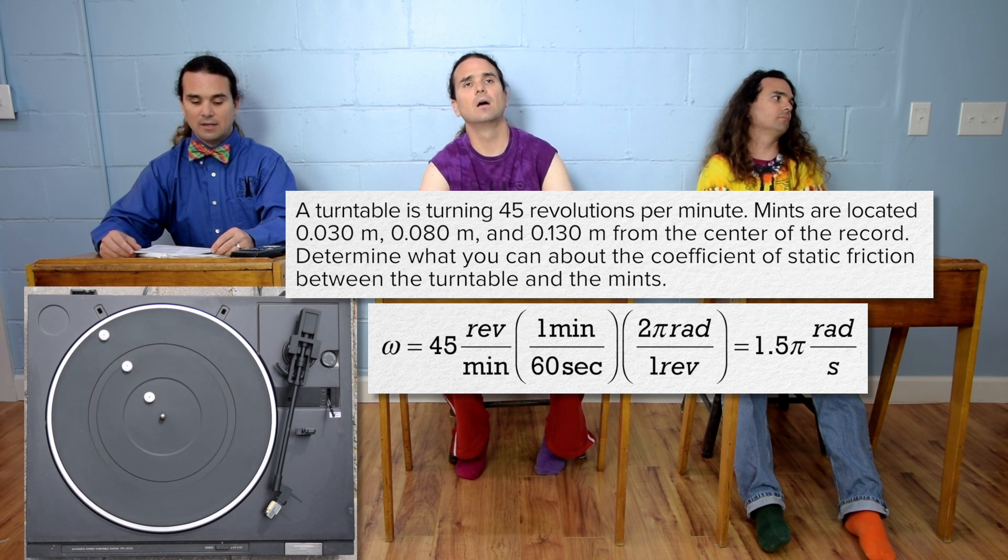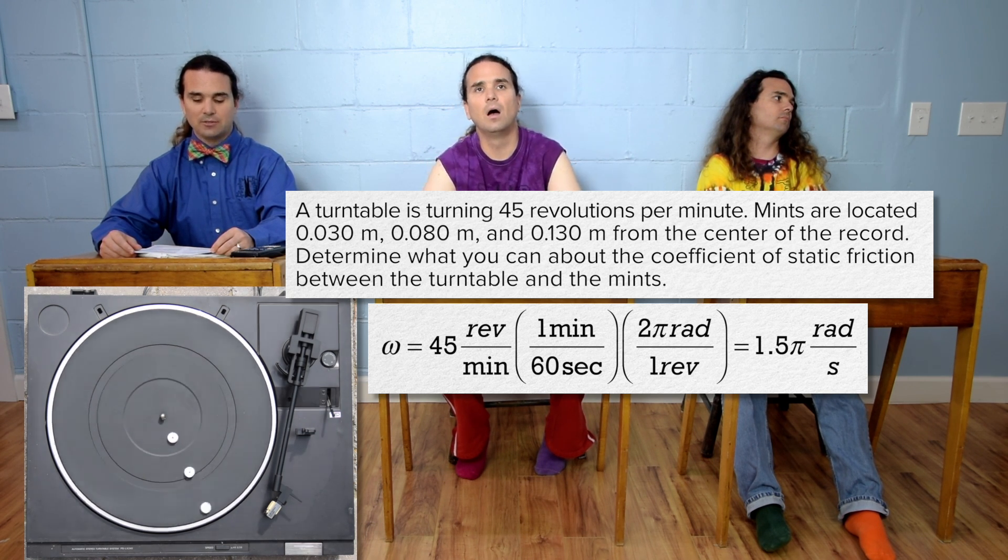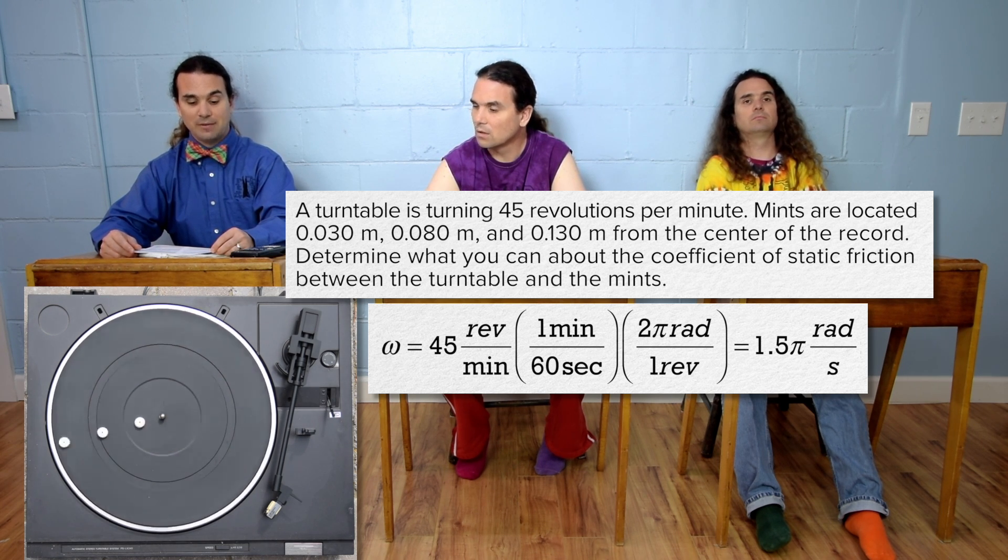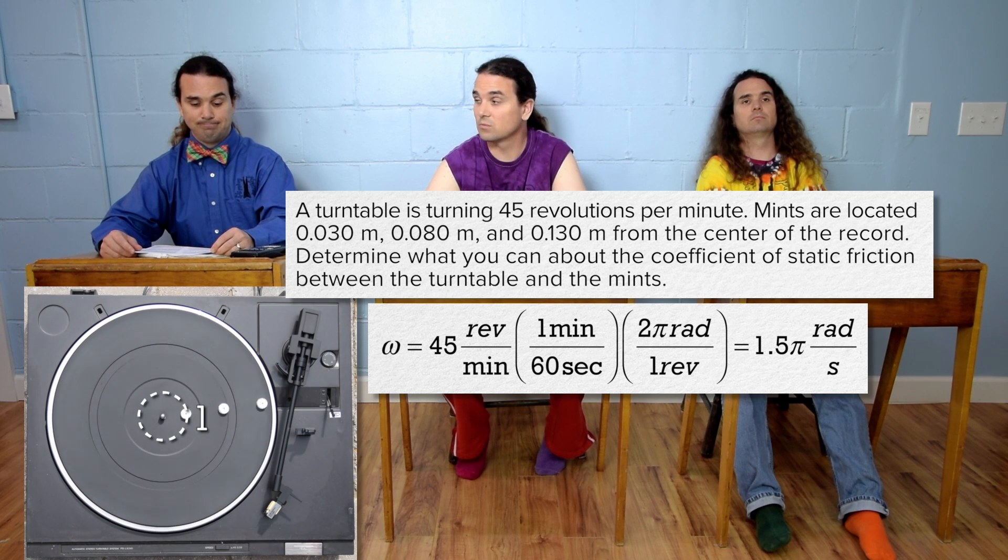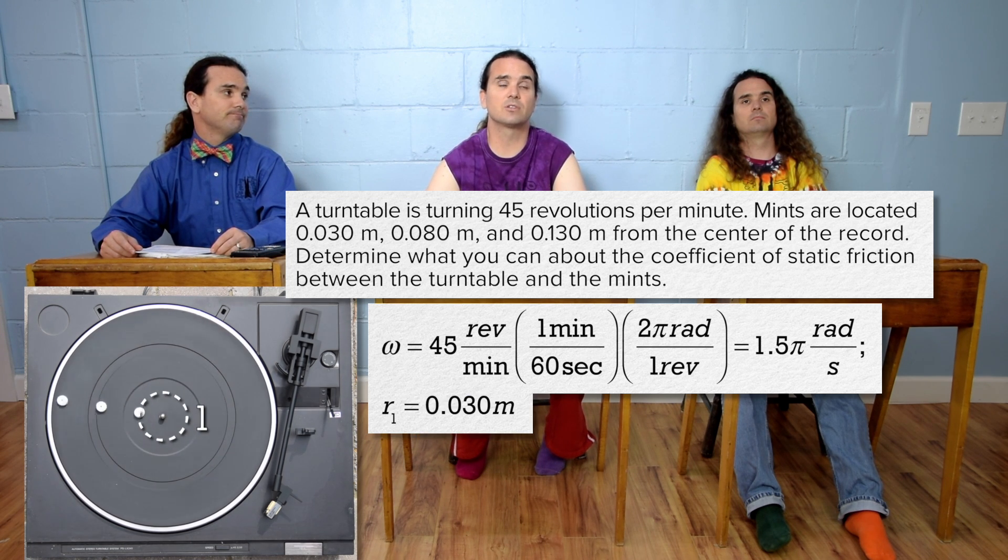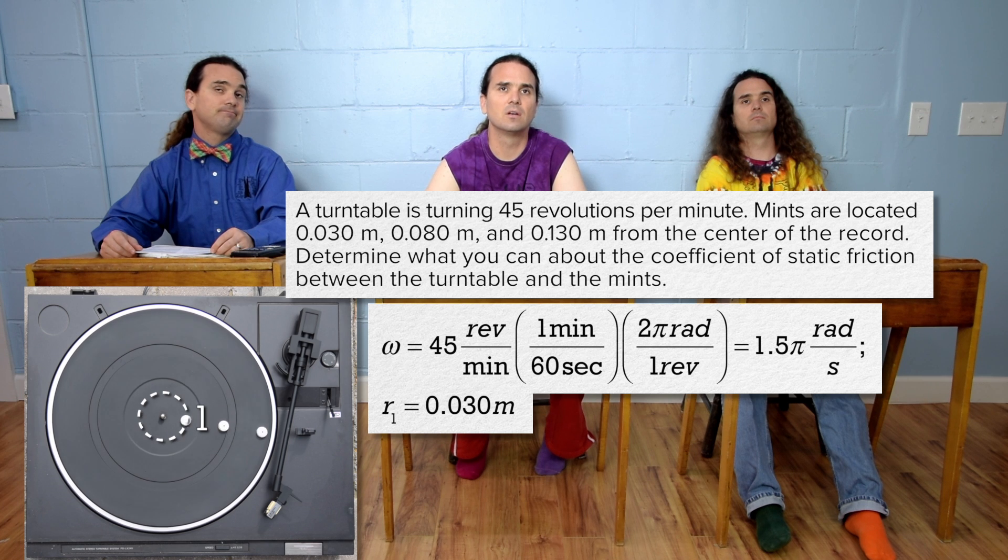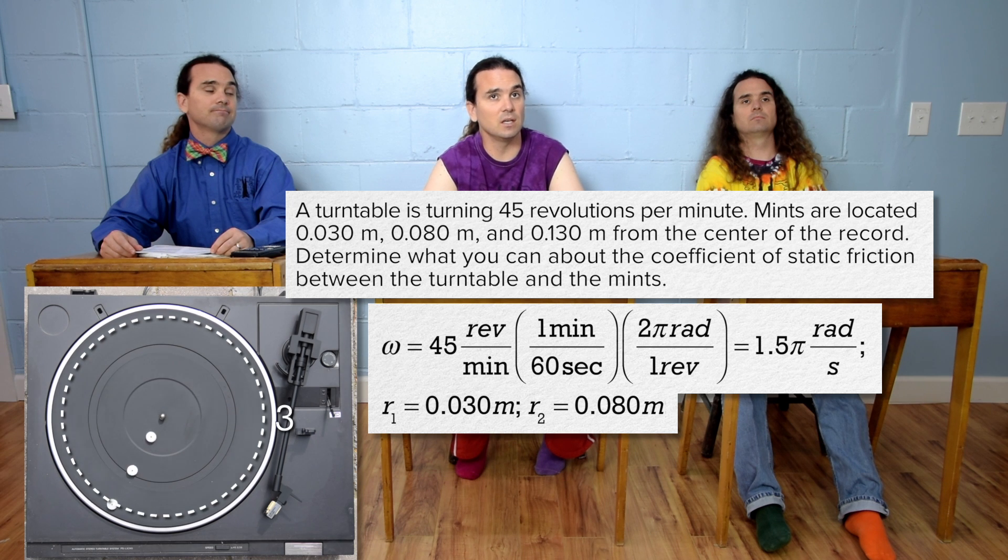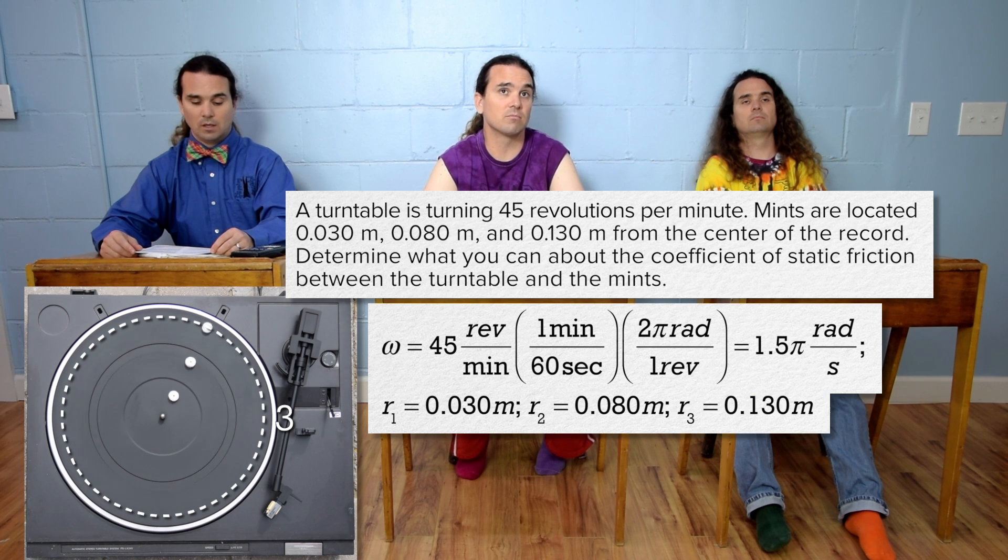Mints are located 0.030 meters, 0.080 meters, and 0.130 meters from the center of the record. Radius 1 equals 0.030 meters, radius 2 equals 0.080 meters, and radius 3 equals 0.130 meters.